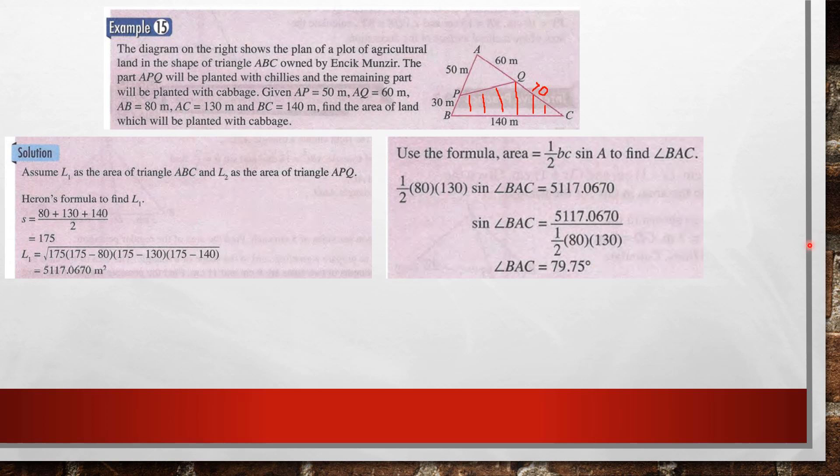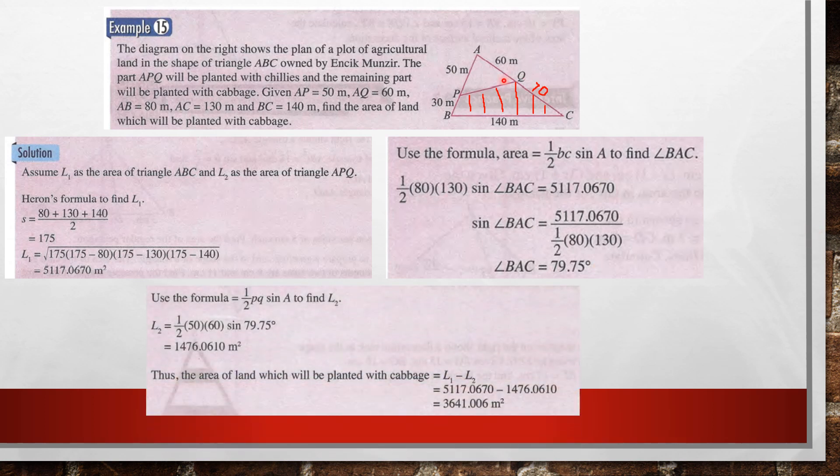So then you can apply the formula half BC sine A here. So half, AP is 50 times AQ 60, times with sine 79.75. So you will get 1,476.0610. So this is the area of APQ.